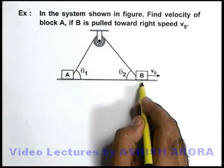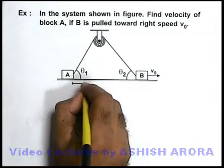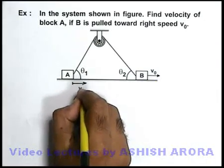Now in this situation, if B is going toward right, it is obvious that A must move toward right with a velocity, say vₐ.